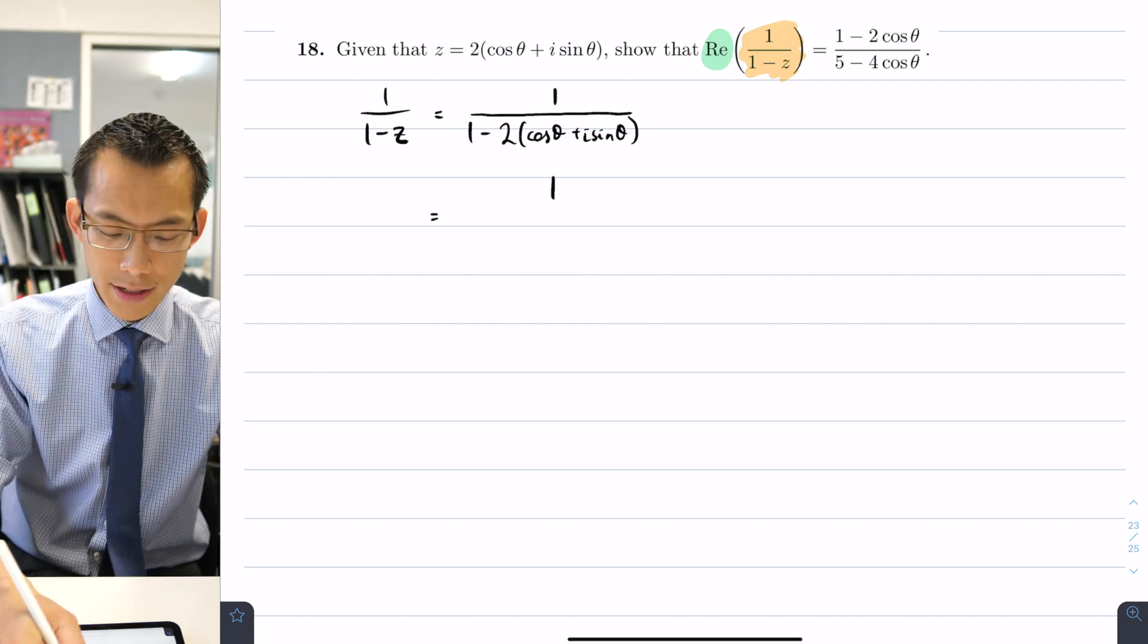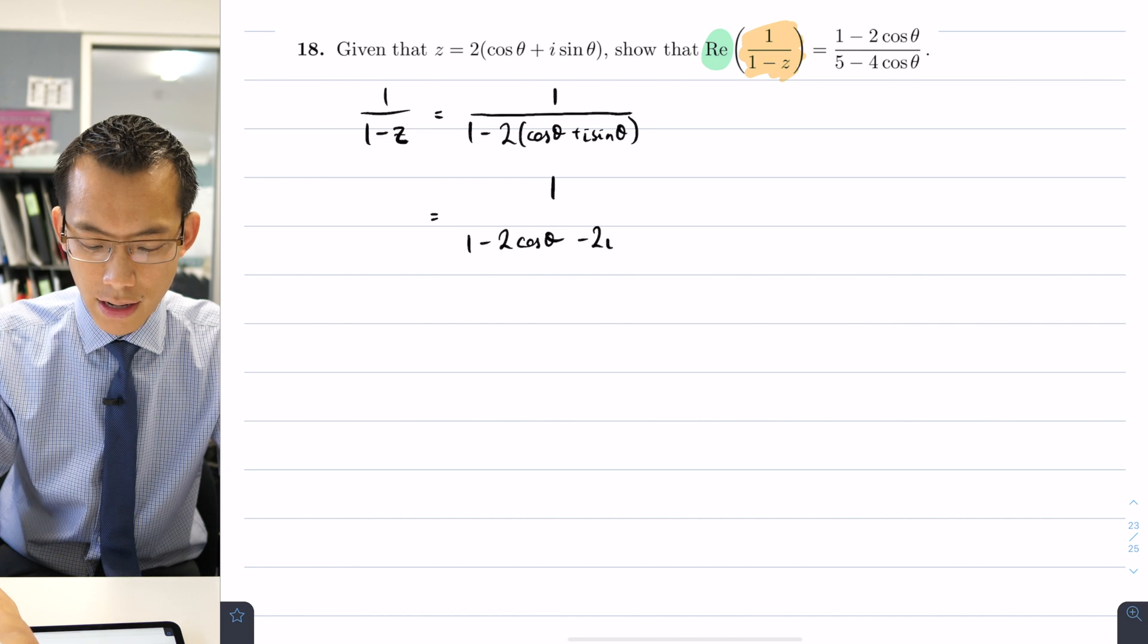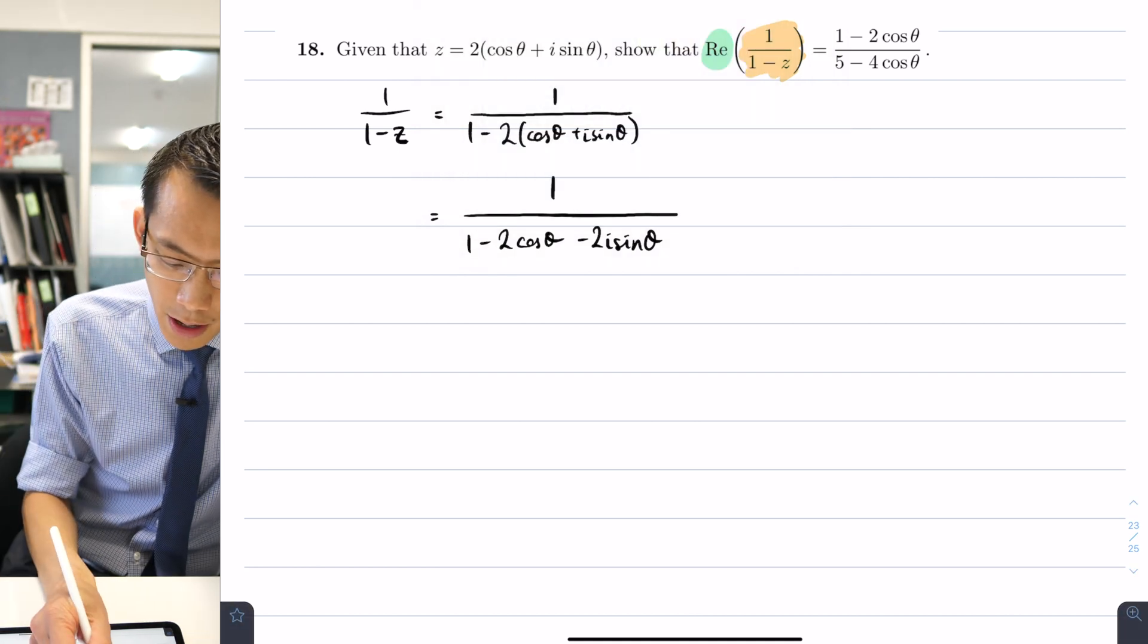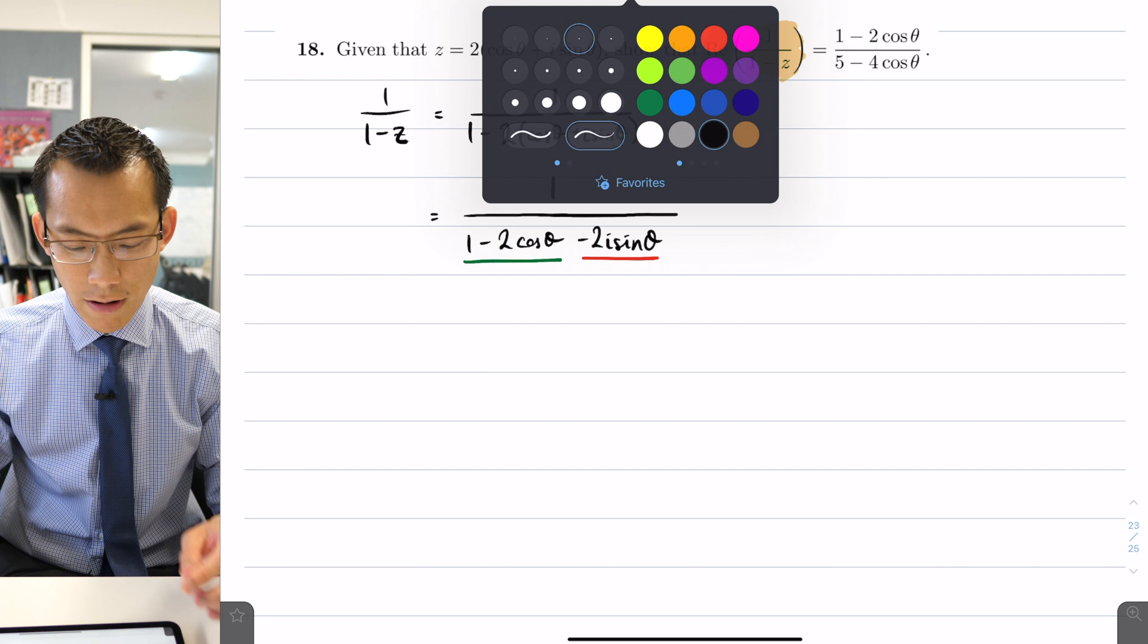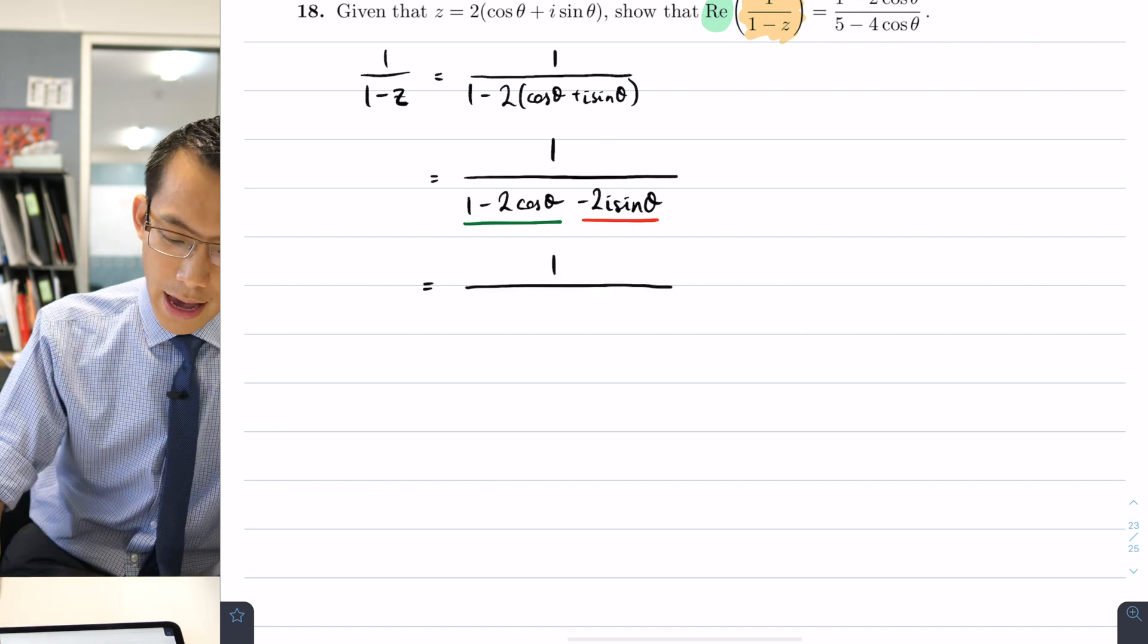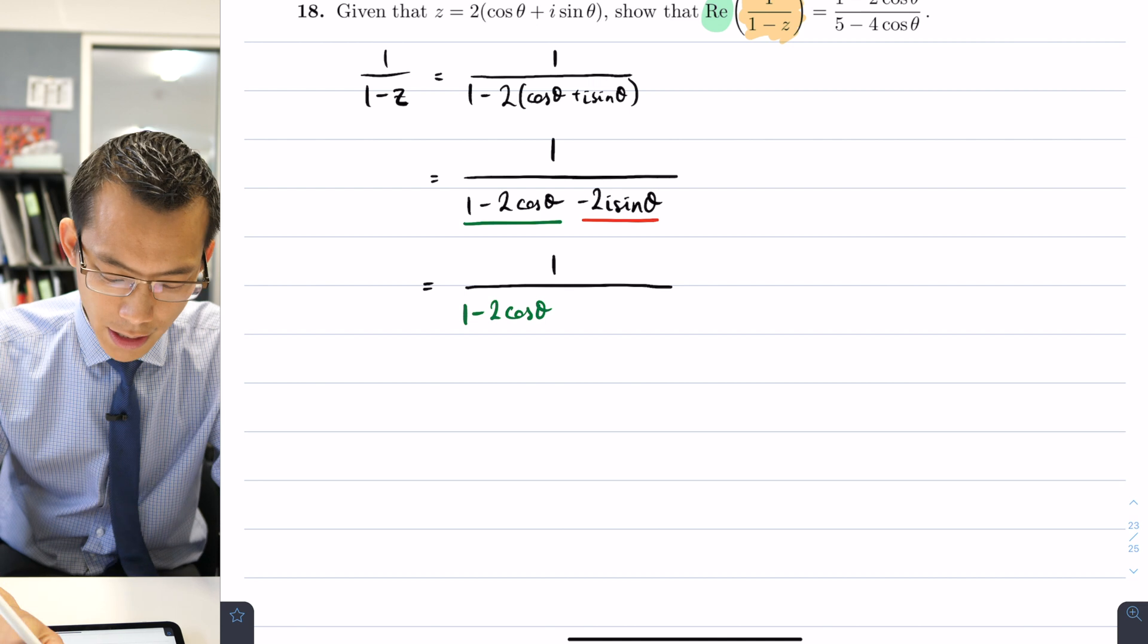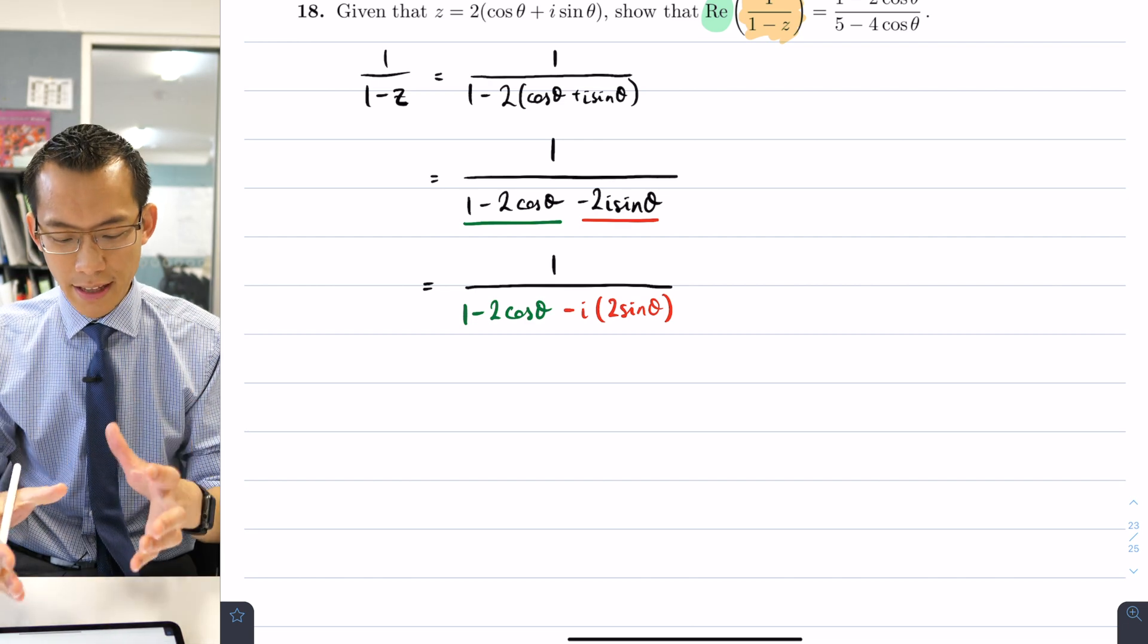You can see in the denominator, if I expand, I'm going to get 1 - 2cos θ, and then the next thing I would write is -2i sin θ. Hopefully it's now clear to us there's two components here that stand out: you've got this part over here which is the real part, and then you've got this part over here which is the imaginary part. So I can write this as 1 over (1 - 2cos θ) and then here comes the imaginary part, -i(2sin θ), with that factor of i taken out the front just to make it super ultra clear.